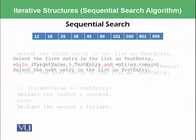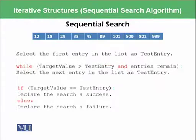And between this procedure we will further check if target value is equal to test entry or not. So whether 12 is equal to 45 or not. If it is not equal then we will fetch the next 18 in place of 12.